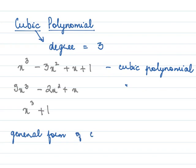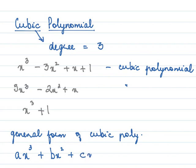The general form of a cubic polynomial is ax³ + bx² + cx + d. This is cubic because it has degree 3, and this is the general form of a cubic polynomial.